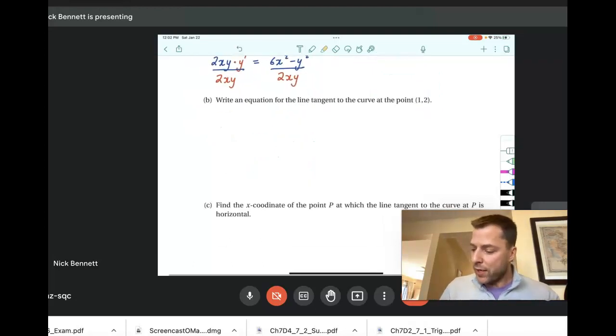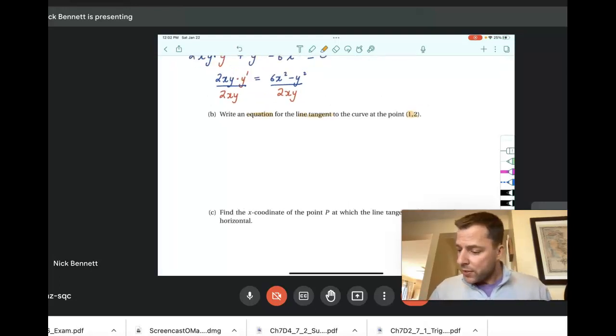In part b, they want an equation. And an equation of the line tangent. For an equation, you need a point and you need a slope. Well, we've already got the point and we've already got the slope. So we're actually just going to substitute in. You're going to have y prime is equal to 6 times x² minus y² all over 2 times x times y. So wherever there's an x, there's a 1. Wherever there's a y, there's a 2, right? Because x and y there.